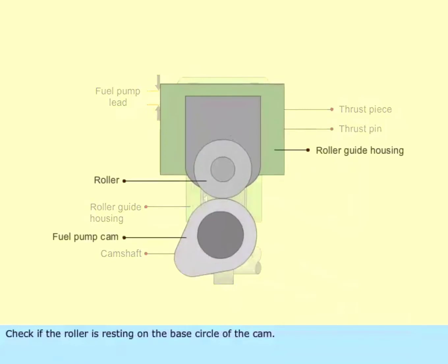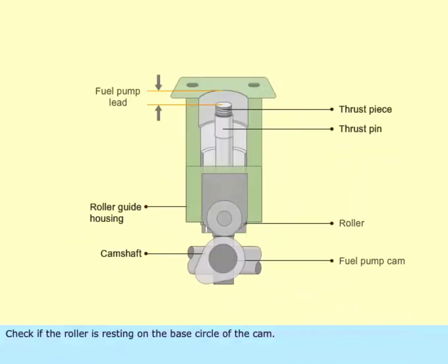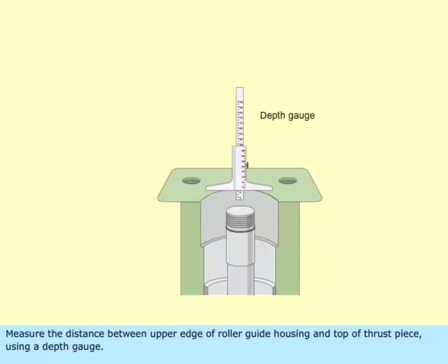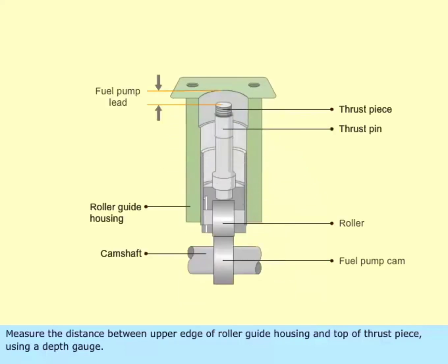Check if the roller is resting on the base circle of the cam. Measure the distance between upper edge of roller guide housing and top of thrust piece using a depth gauge. Compare the reading with the prescribed value in the manufacturer's manual.